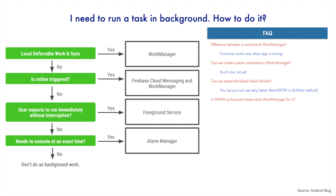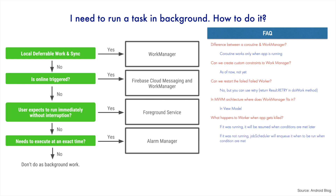In MVVM architecture, which is typical in Android, where does work manager fit in? The answer is you can use it with a view model. As for what happens to the worker when the app gets killed: if the worker was running, it will be resumed later when the criteria is met. If it was not yet running, job scheduler will enqueue it and run it whenever the condition is met. You need not worry about it.